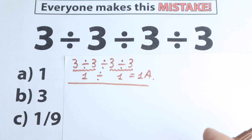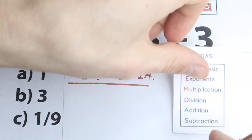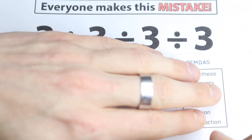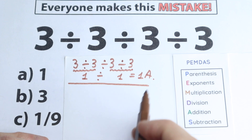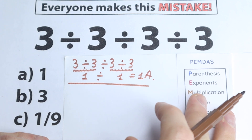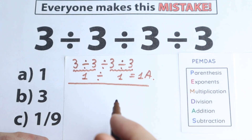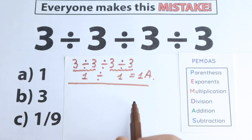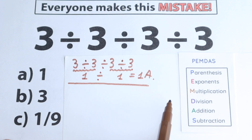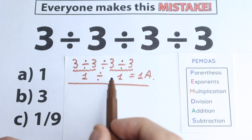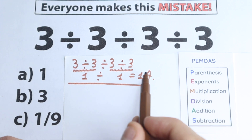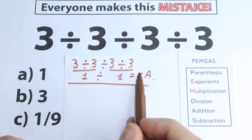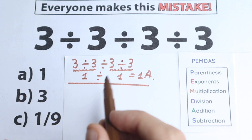For this question, let's look at the PEMDAS order of operations — this is the most popular order of operations in the world, and all internet libraries work according to it. Let's solve this question according to this order of operations. Maybe we'll get the same answer of 1 — let's check.